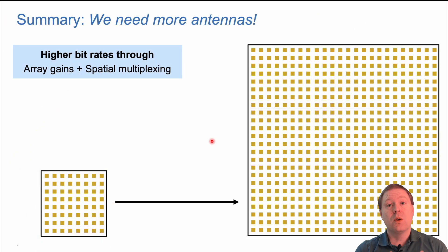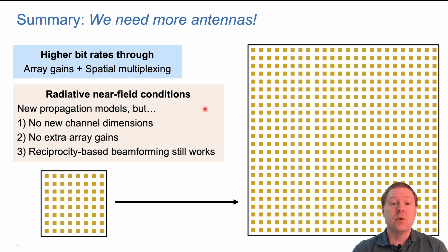So to summarize, we really need more antennas in future generations of wireless technology to get higher bit rate through array gains and spatial multiplexing of more users. When we add more antennas, we will see radiative near field propagation conditions, and that requires us to use new channel models. However, we don't get any new channel dimensions just because we see near field propagation phenomena. It's the same number. We don't get any extra array gains. It's still proportional to the number of antennas. And reciprocity-based beamforming algorithms still work terrifically in the near field.